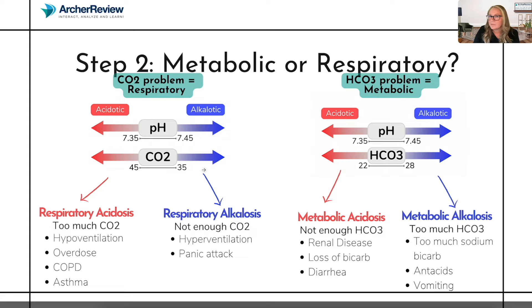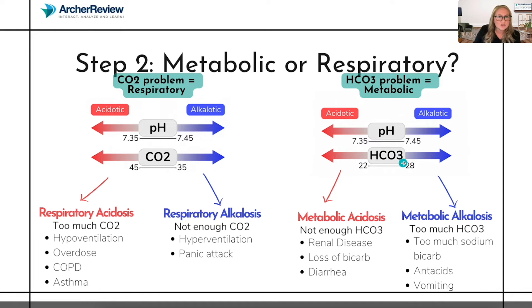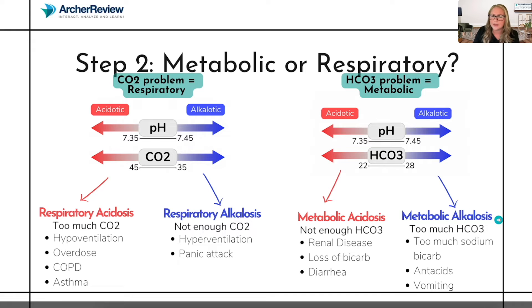Now if I've examined my pH and I've determined I'm having an alkalosis, but I look at my CO2 and it is not the party pooper, I have to turn my attention to my other potential candidate — maybe my bicarb is the party pooper. Bicarb is a base, so extra base — an increase in my bicarb — can cause my pH to go up and cause it to become alkalotic. Things that cause this metabolic alkalosis are anything that cause a retention of sodium bicarb — antacids, as well as vomiting, when I lose a lot of stomach acid. If I get rid of that hydrochloric acid, I can have a metabolic alkalosis.